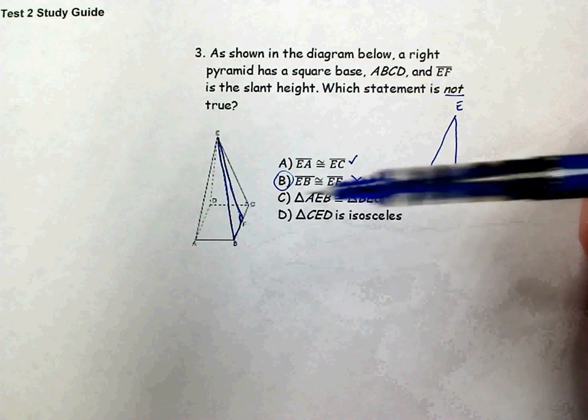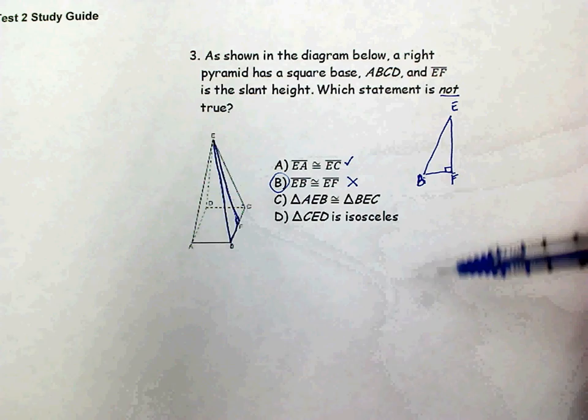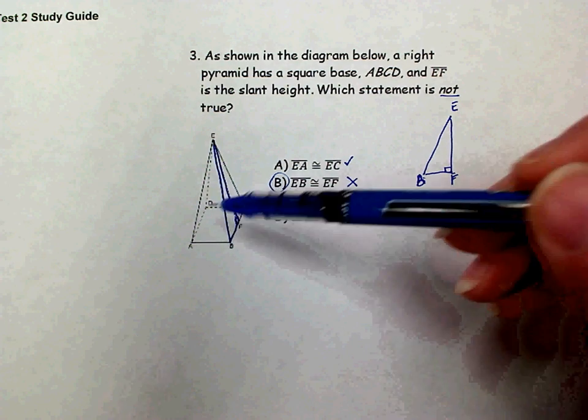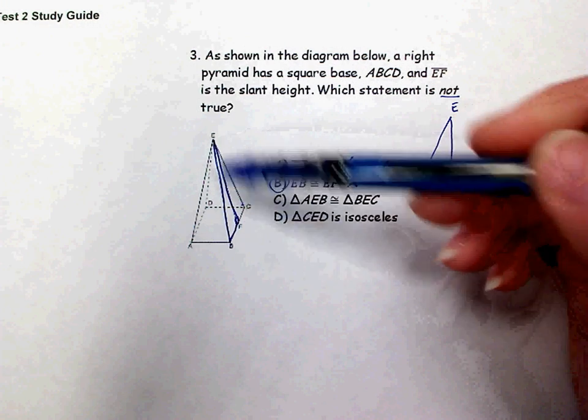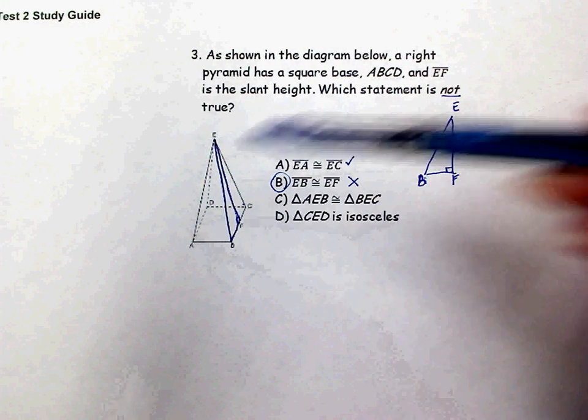All of the triangular faces are going to be isosceles because from the apex to each one of the vertices are going to be congruent to each other. So these are both true, meaning B is our false statement.